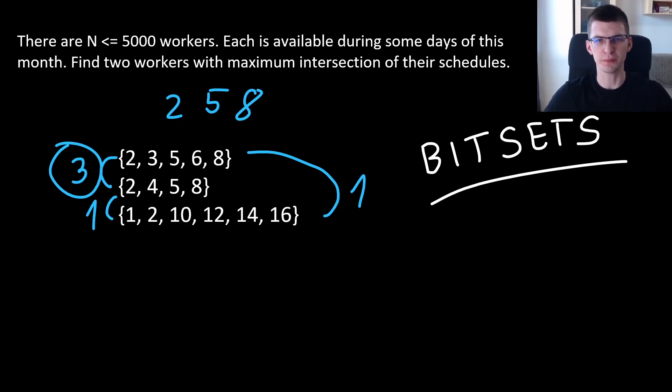If you iterate over all the pairs of workers, you will have N square times the time needed to find an intersection. We are talking about a month, so at most 30 days, and you can merge such two lists. You can find the intersection, for example using two pointers method. It will be linear in total, 30. Let's say that this is in general D, the number of days. And this complexity is slightly too slow.